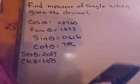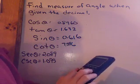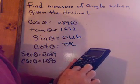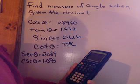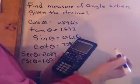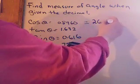So again, what you do is second cosine, type in that angle, 0.8960, hit enter. And it tells you that the angle is 26.36 and it goes on, so we're going to round that to 26.4.